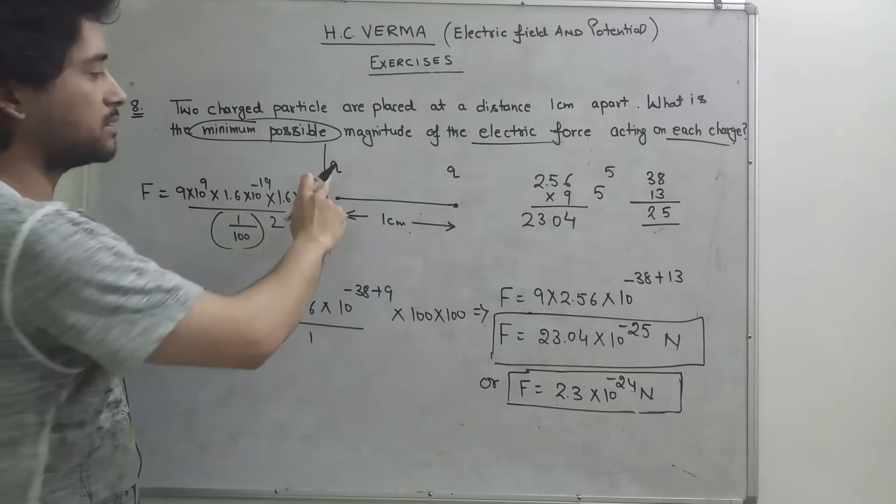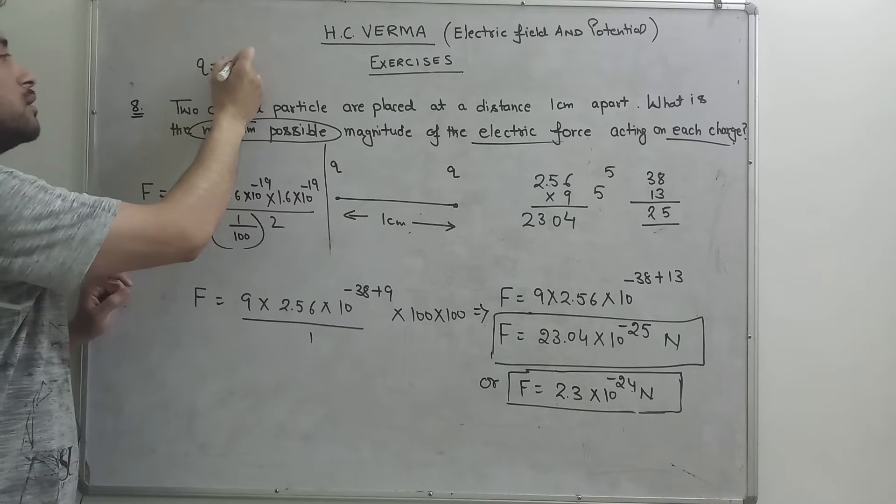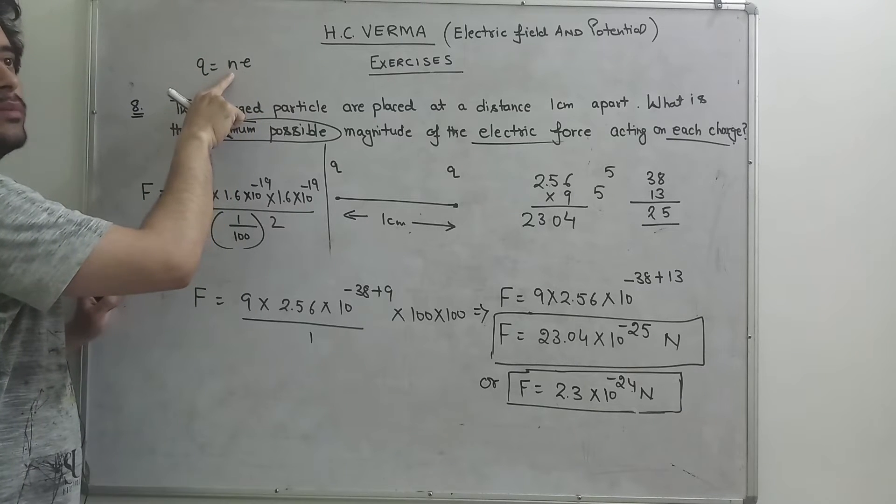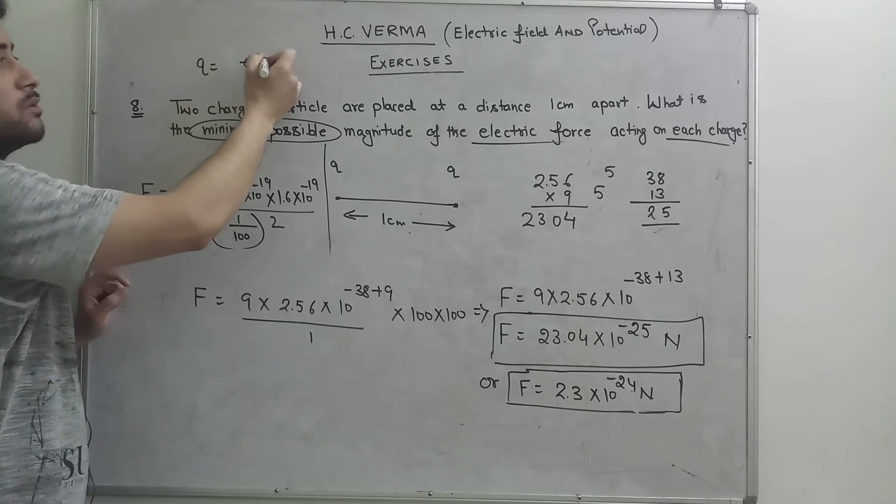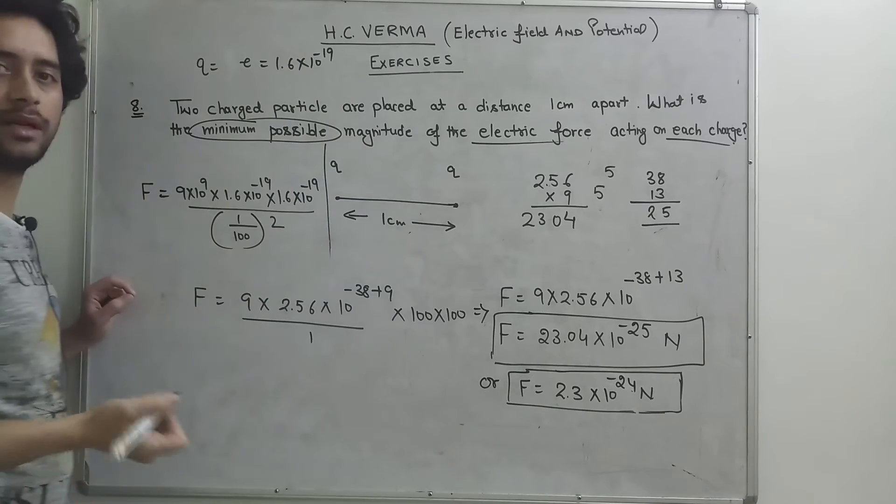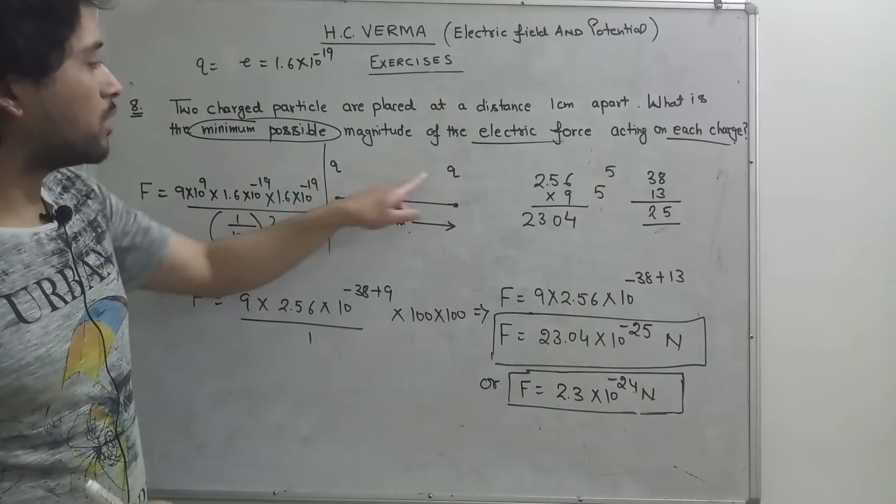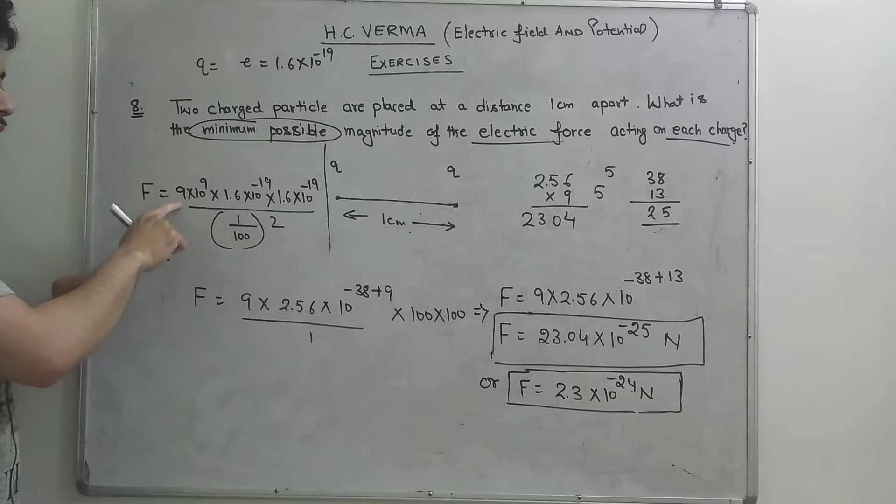Q is equal to e, which means equal to e, that is 1.6 into 10 raised to minus 19, that is the charge of an electron. So q value minimum and distance is one centimeter. So F is equal to k, 9 into 10 raised to 9.